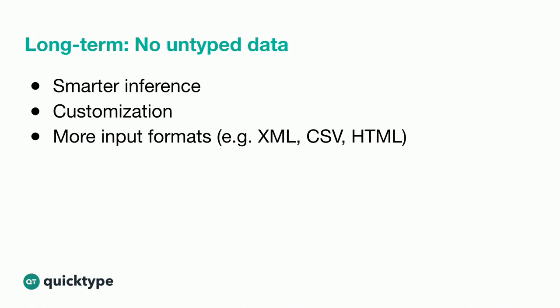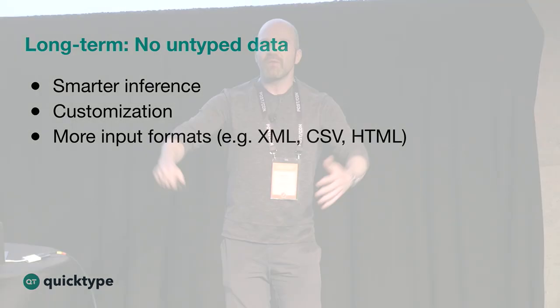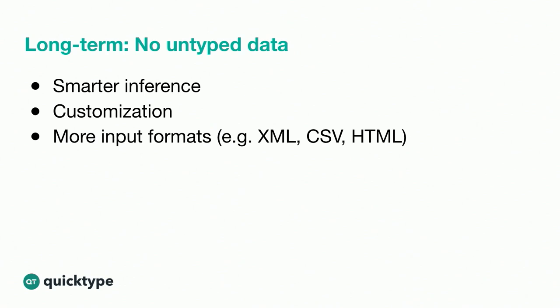Our long-term vision is that we want to rid the world of untyped data. Ideally, you give us data that you don't know the types of, and we'll figure out what it is. Some things we're working on: yet smarter type inference, customization so you can use QuickType as a library and customize the code emitters to generate code more useful for your use case, and more input formats — CSV and XML are the most important ones.